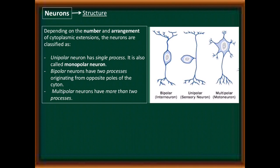Depending on the number and arrangement of cytoplasmic extensions, the neurons are classified as follows. Unipolar neurons have a single process and are also called monopolar neurons. Bipolar neurons have two processes originating from opposite poles of the cytone. Multipolar neurons have more than two processes. All three types are clearly shown in the diagram.